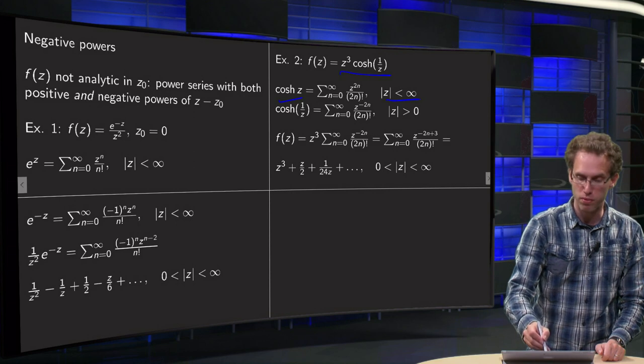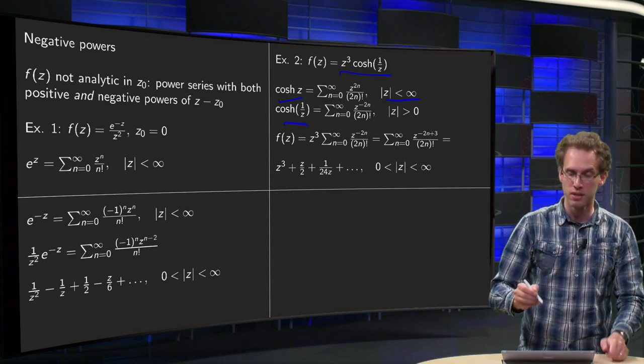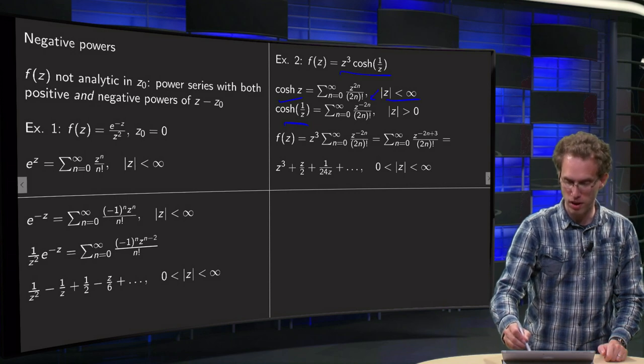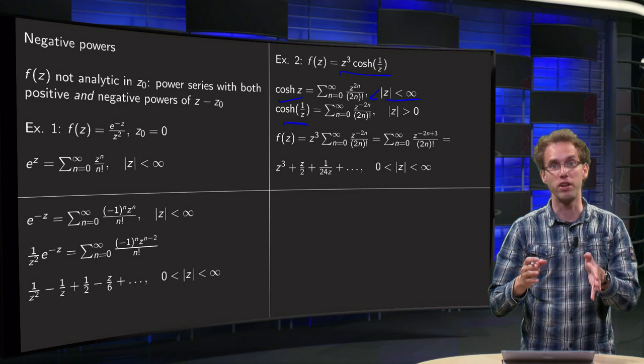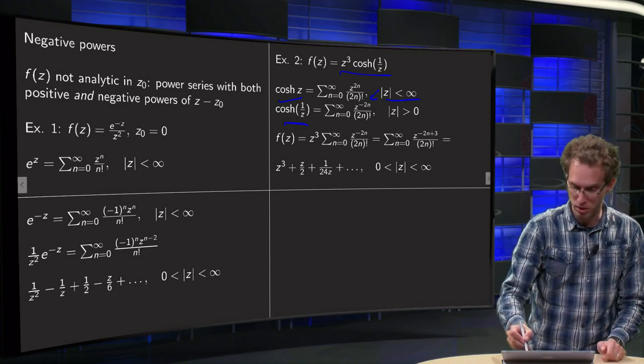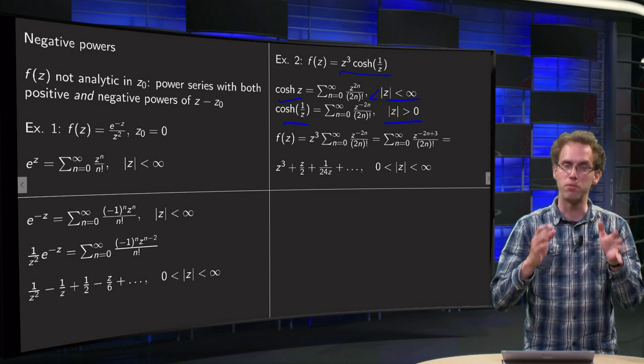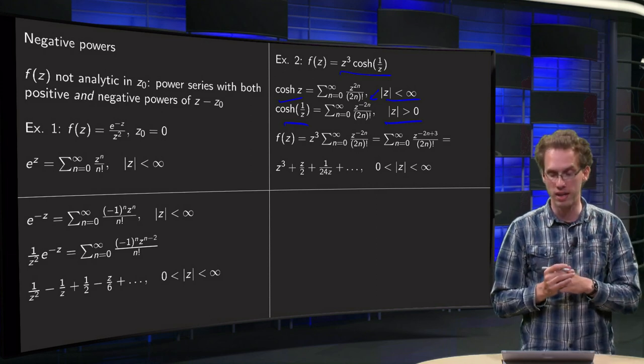So again from the cosine hyperbolic of 1 over z, substitute 1 over z in the place of z. Then we get z to the power minus 2n. And now if z is smaller than infinity that means that 1 over z is bigger than zero. So now if we plug in 1 over z instead of z we need to have norm of z bigger than zero.